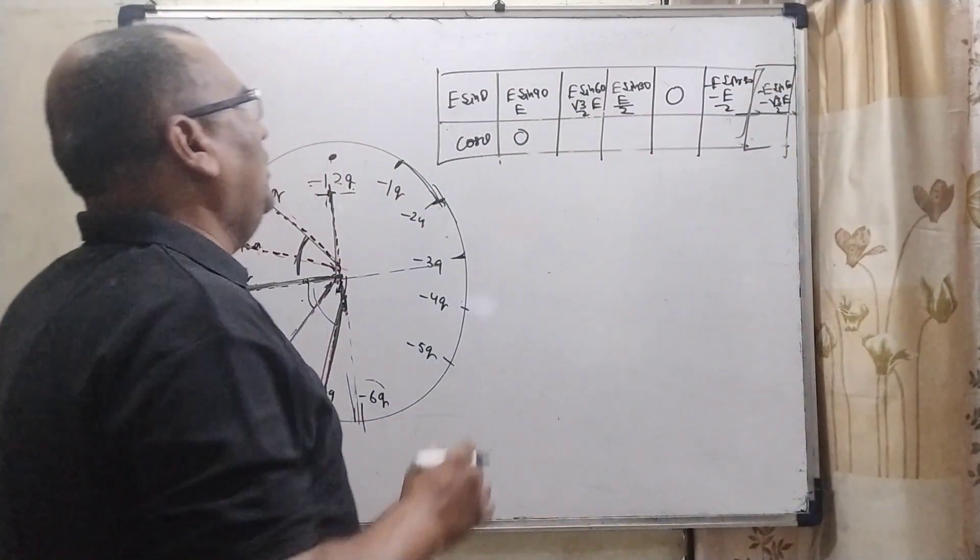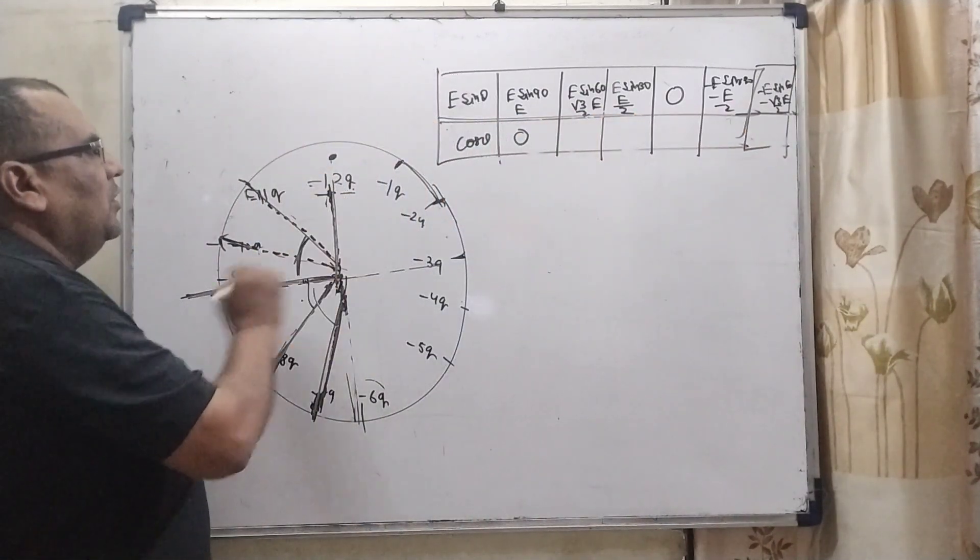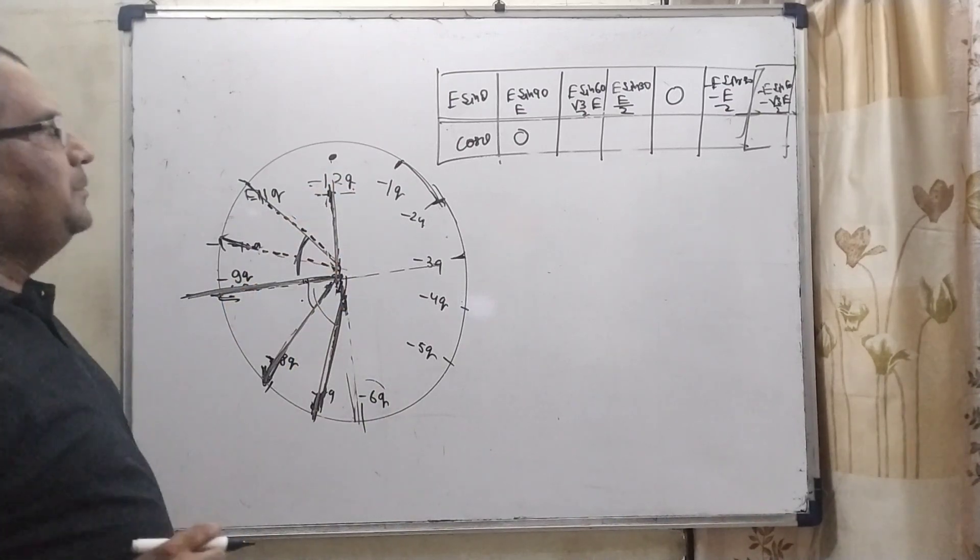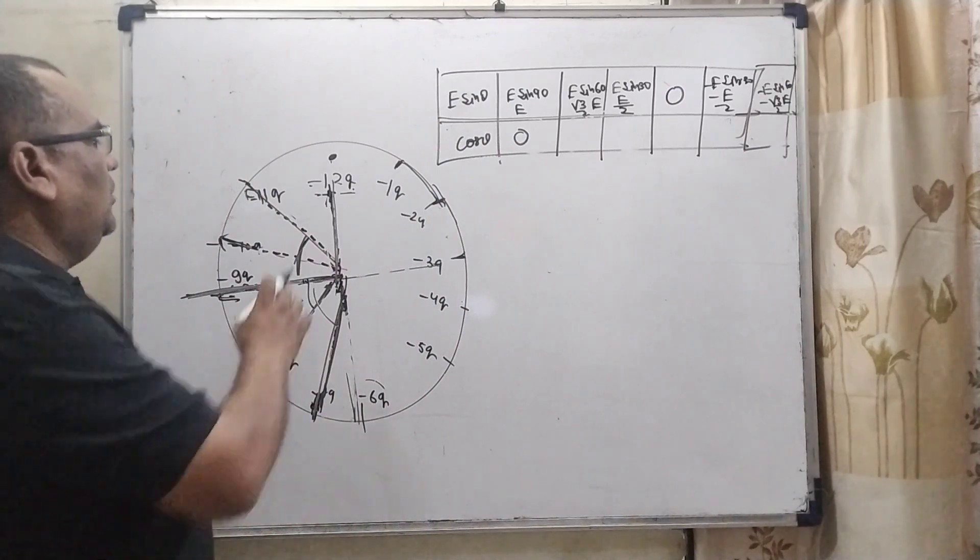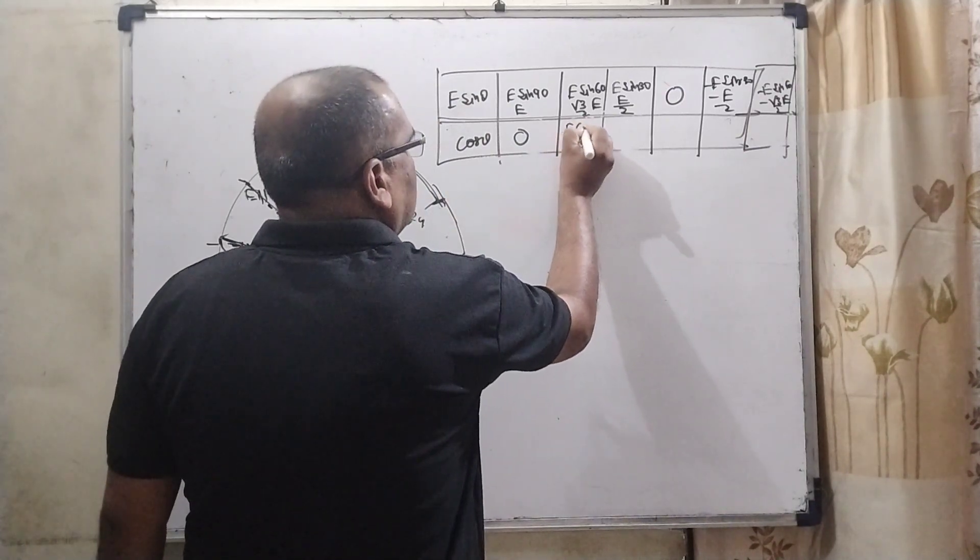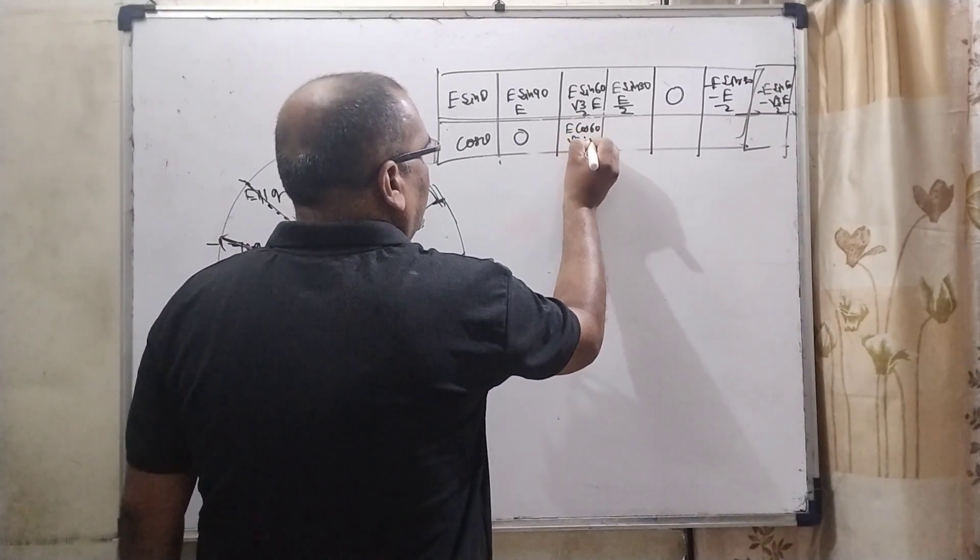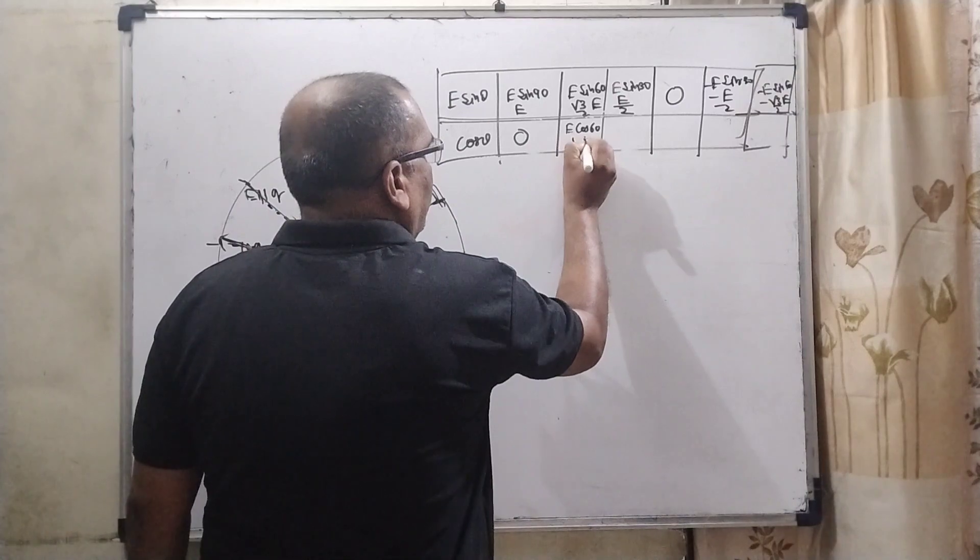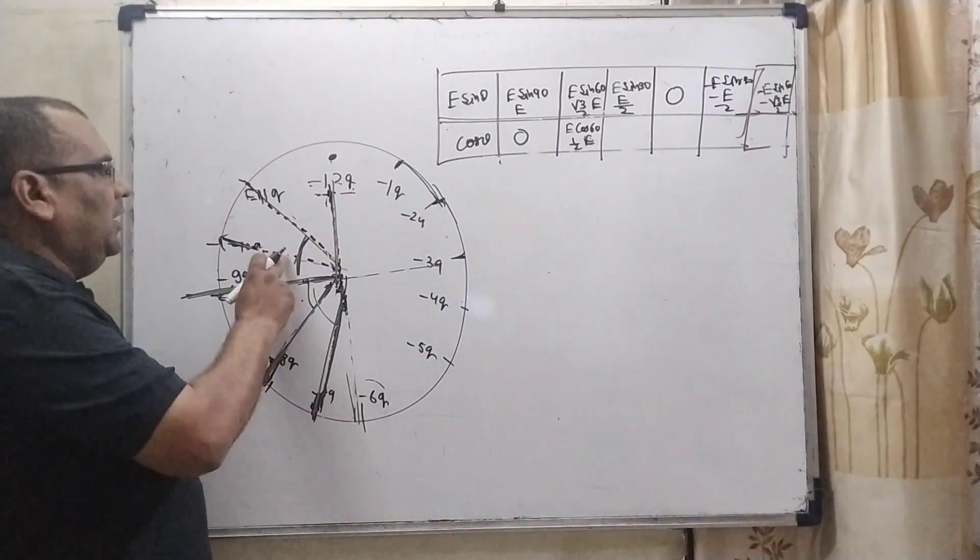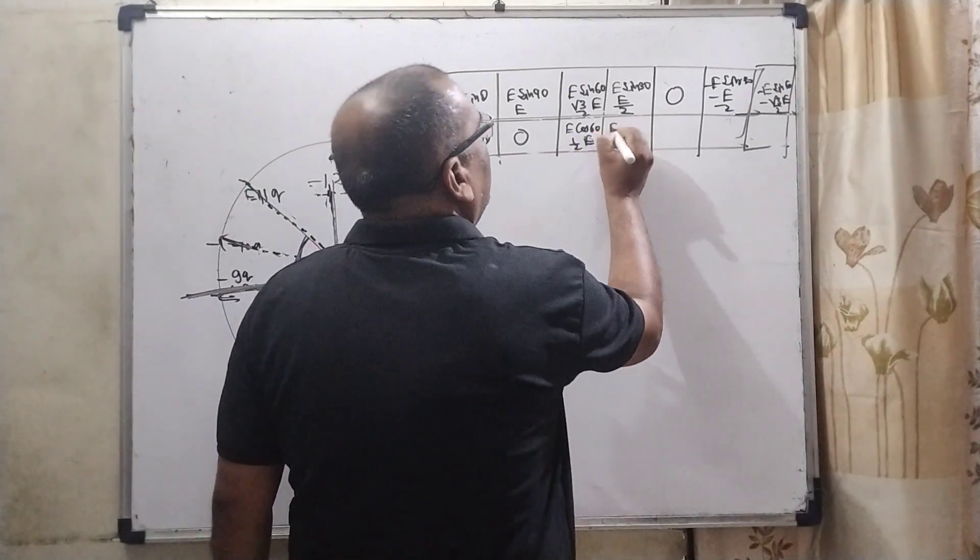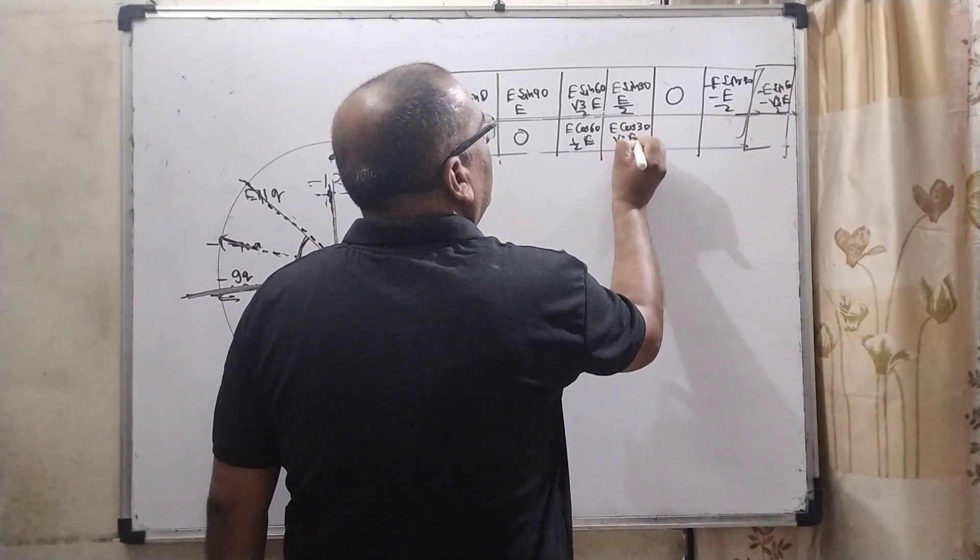This is all sine components. Similarly, here we are using cosine components. This is perpendicular, so here E cosine 90, that is 0. Now E cosine 60, that is 1 by 2 E. And sine cosine 30, E cosine 30, that is root 3 E by 2.